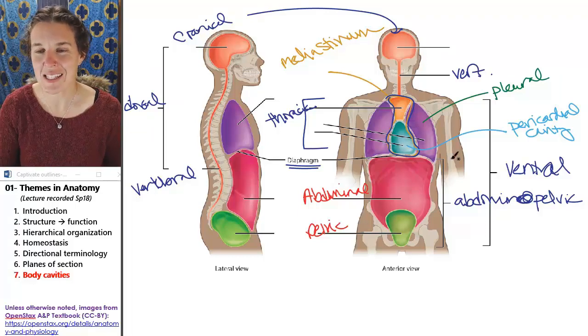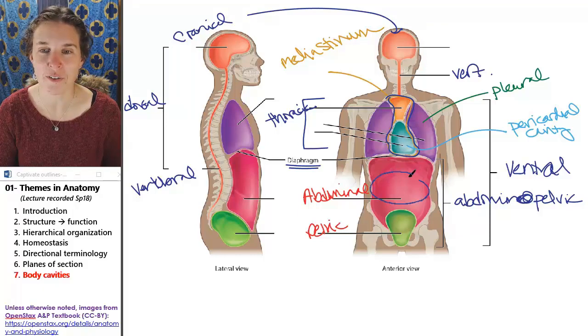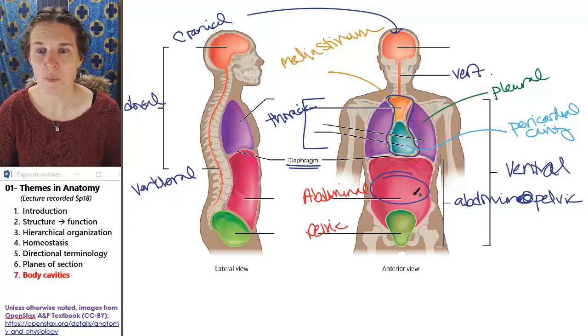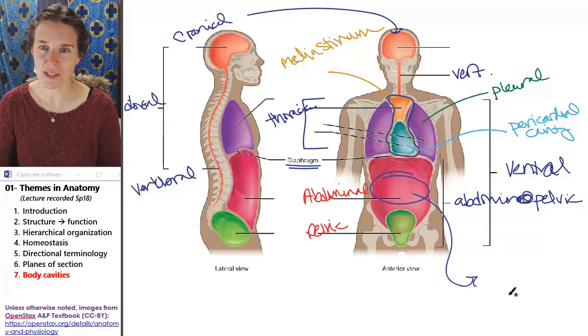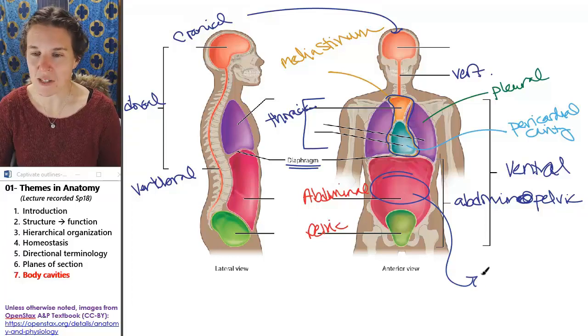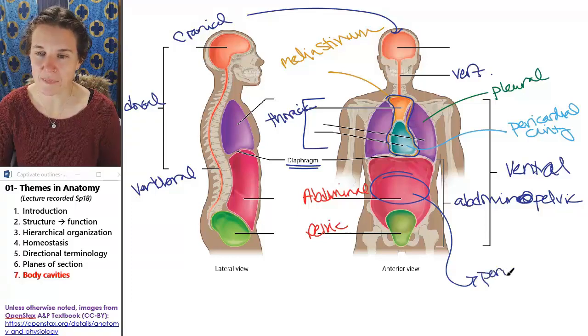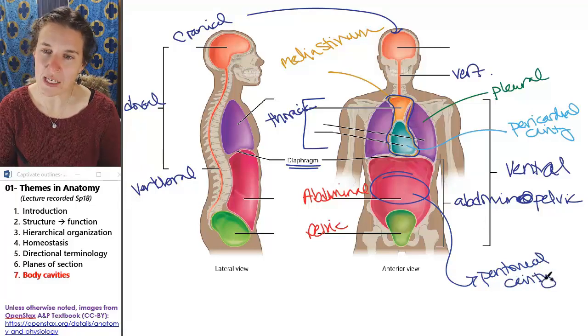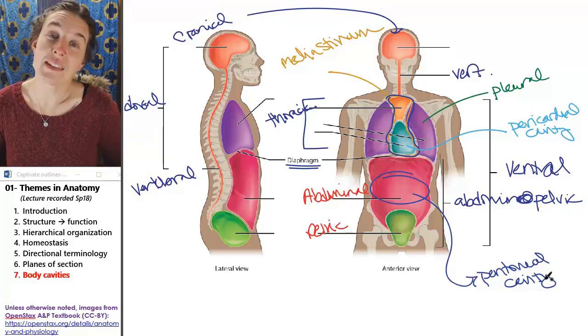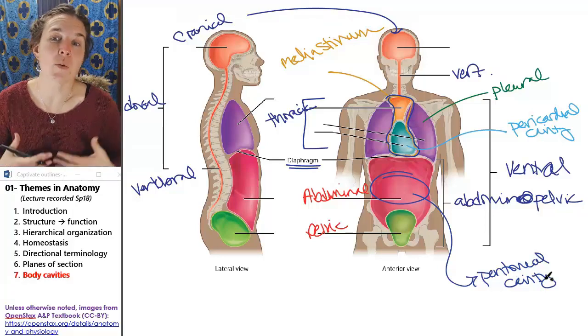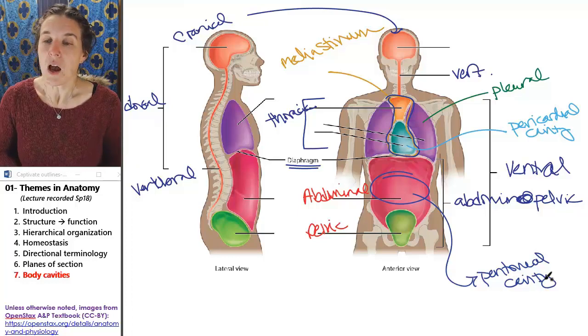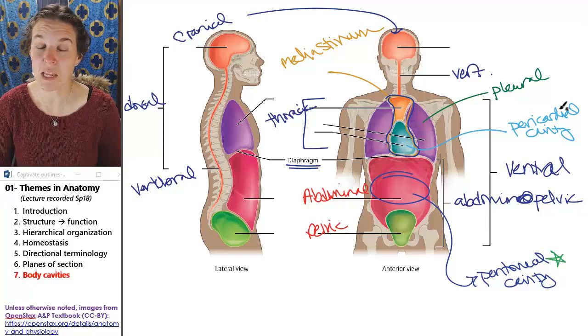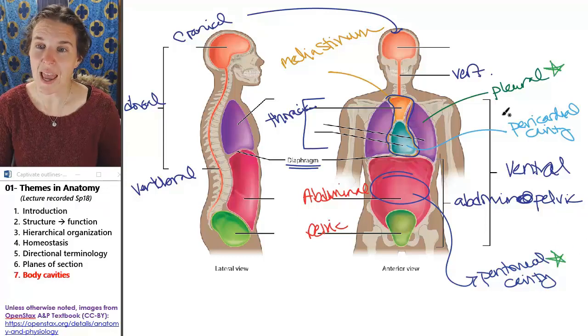There's one cavity that they did not include in this diagram, so I'm going to draw it for you. And that is totally diagrammatic and inaccurate. But when we talk about the digestive system, we will see why I can't draw it for you. But this cavity is called the peritoneal cavity. The peritoneal cavity is found within the abdominal cavity, which is found within the abdominal pelvic cavity. I'm going to put a little star next to the peritoneal cavity, the pleural cavity, and the pericardial cavity.